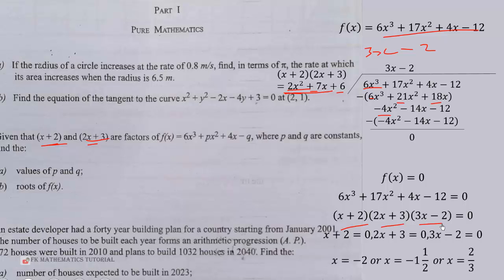So the complete factorization will be (x + 2)(2x + 3)(3x - 2) equals 0. So that will give us x equals negative 2 or x equals negative 1 and 1/2 or x equals 2/3. So these are the roots of f(x).